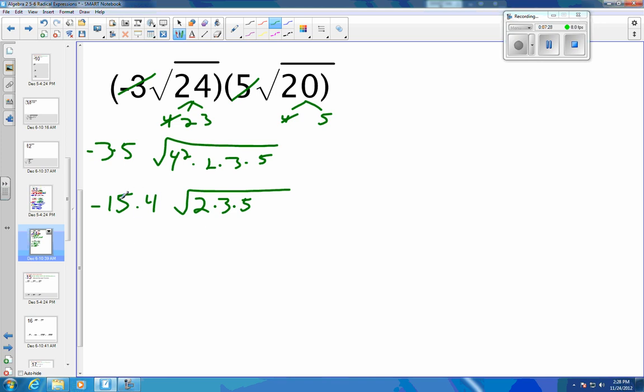And then I'm ready to multiply together. So I have 4 times 15, which is 60. So negative 60 on the outside. And this would be 2 times 3 is 6. 6 times 5 is 30, square root of 30 on the inside. Final answer. It's as simplified as it gets. So that's how we multiply with our radicals and reduce them.